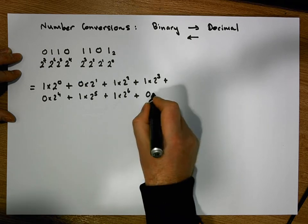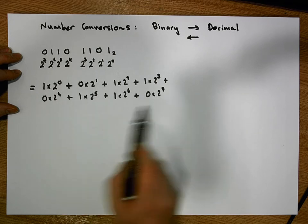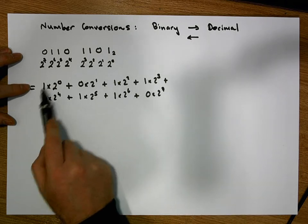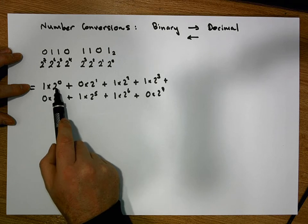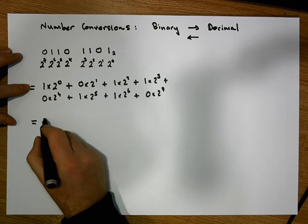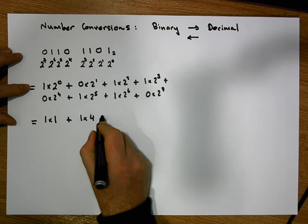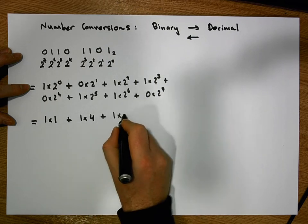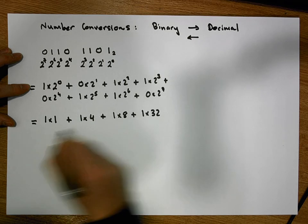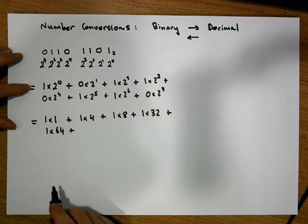Remember that zero times any number is zero, so the terms with a zero coefficient reduce to zero. The only numbers that contribute to the decimal value are where we have a 1 times some power of 2. So we have: 1 × 2⁰, 1 × 2², 1 × 2³, 1 × 2⁵, and 1 × 2⁶.